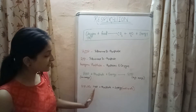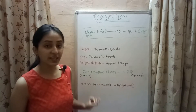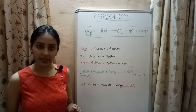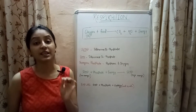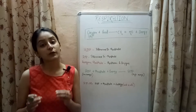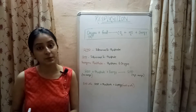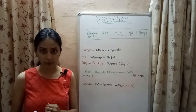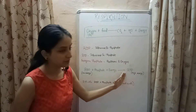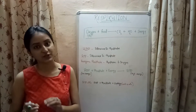When our body needs energy, this ATP gets broken down using water and releases ADP, phosphate, and energy. Since energy in our body is stored in the form of ATP, ATP is known as the energy currency of the cell. So if you are asked in what form the energy released by respiration is stored in our body, the answer will be ATP.